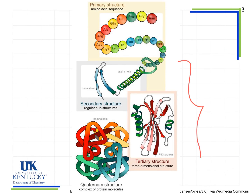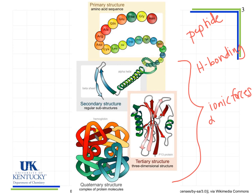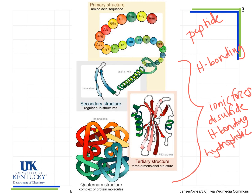For denaturation, we're affecting these levels of structure. Remember, primary structure involves peptide bonds. For secondary structure, we have hydrogen bonding. For both tertiary and quaternary structure, we see ionic bonds or ionic forces, disulfide bridges, hydrogen bonding, and hydrophobic interactions. Those forces holding together tertiary and quaternary structure are going to be disrupted by any of the agents that cause denaturation. A protein like hemoglobin depends on all levels of structure to function correctly — if we take away just one piece of that structure, it can't do its job.